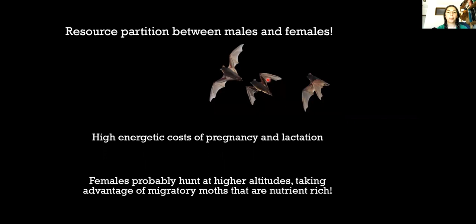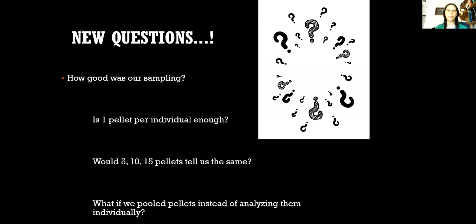We found gender related segregation on the diet of these bats, most likely linked to the high energetic costs of pregnancy and lactation. We hypothesize that females are probably hunting at higher altitudes taking advantage of migratory moths that are rich in lipids and thus highly profitable prey. Furthermore we could only detect these patterns because of the high resolution offered by DNA metabarcoding and the fact that most moth species in Europe have been sequenced. Unfortunately some analysis we'd like to do are not possible for other groups because we don't have enough DNA barcodes out there.